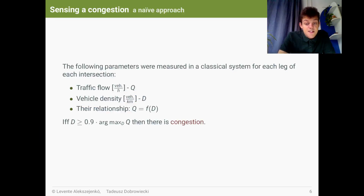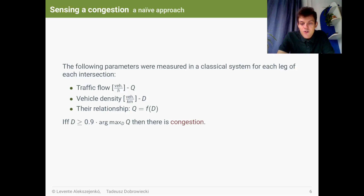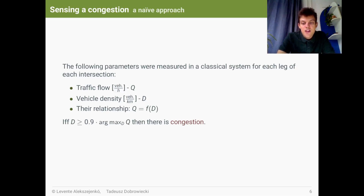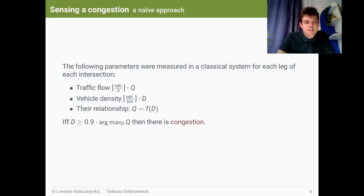How can we sense if there is a congestion? It is a very good question, and in our solution we took a really naive approach. We measure the traffic flow, the traffic density, and also their relationship at each leg of each intersection. We say that there is a congestion if and only if the traffic density at a leg gets higher than 90% of the traffic density which corresponds to the maximum traffic flow.